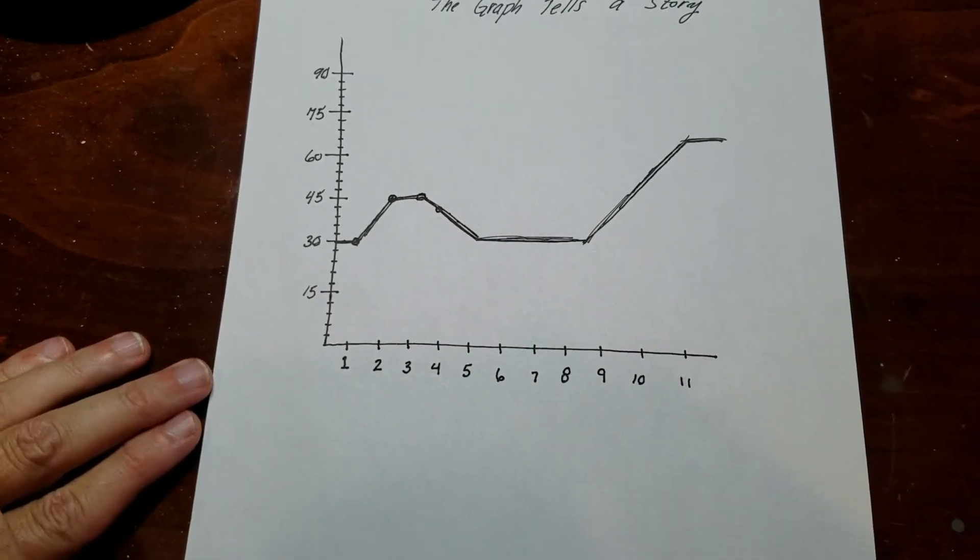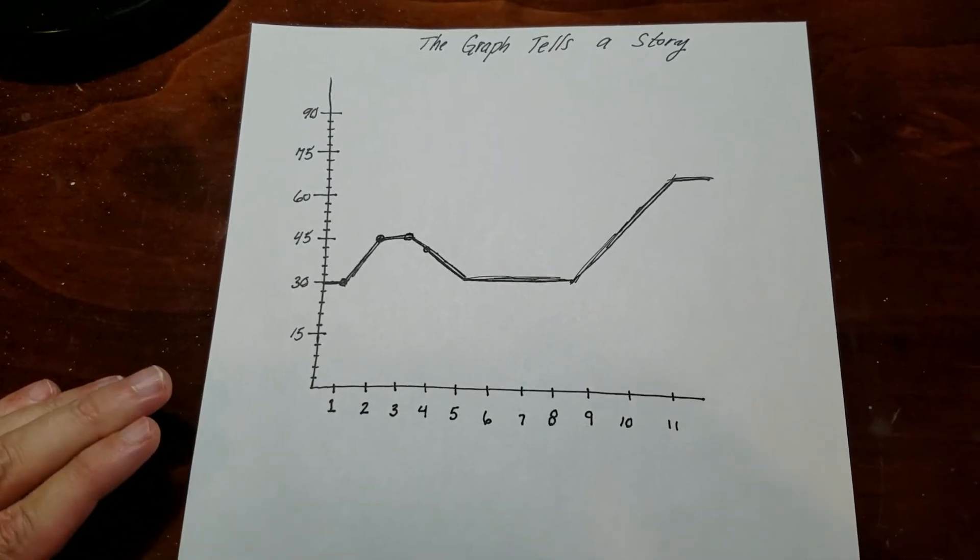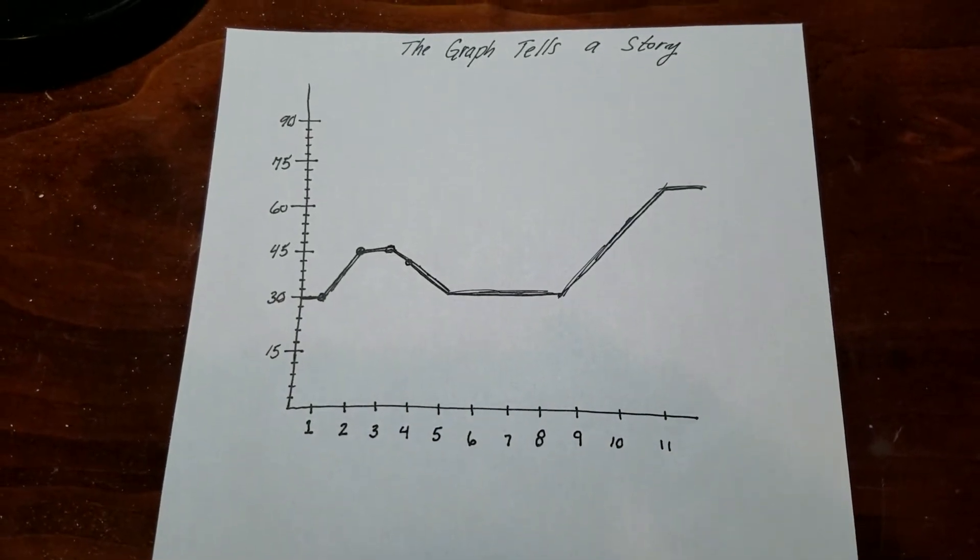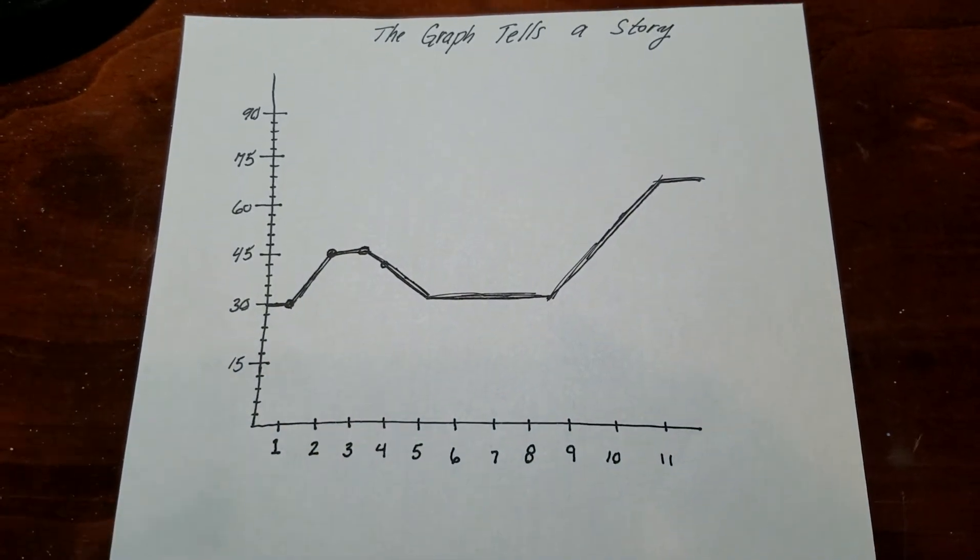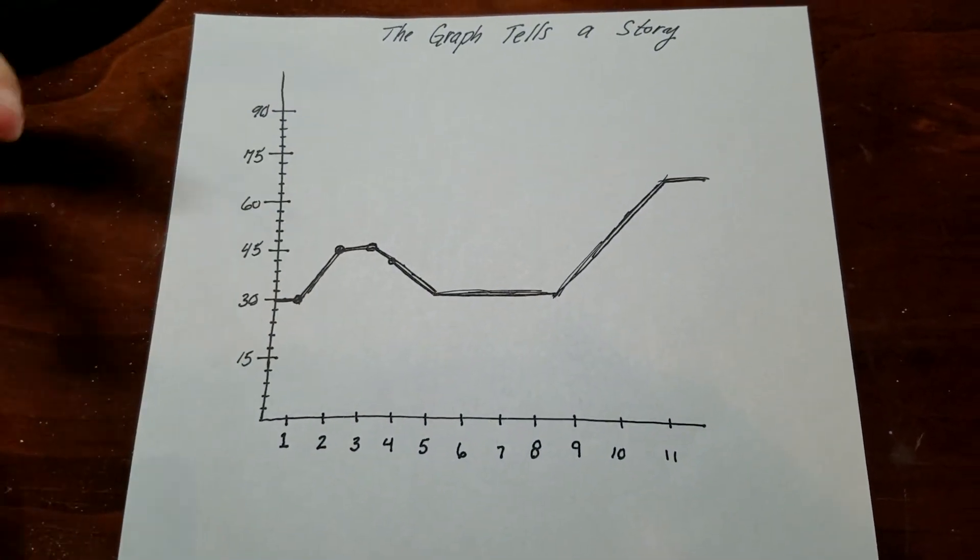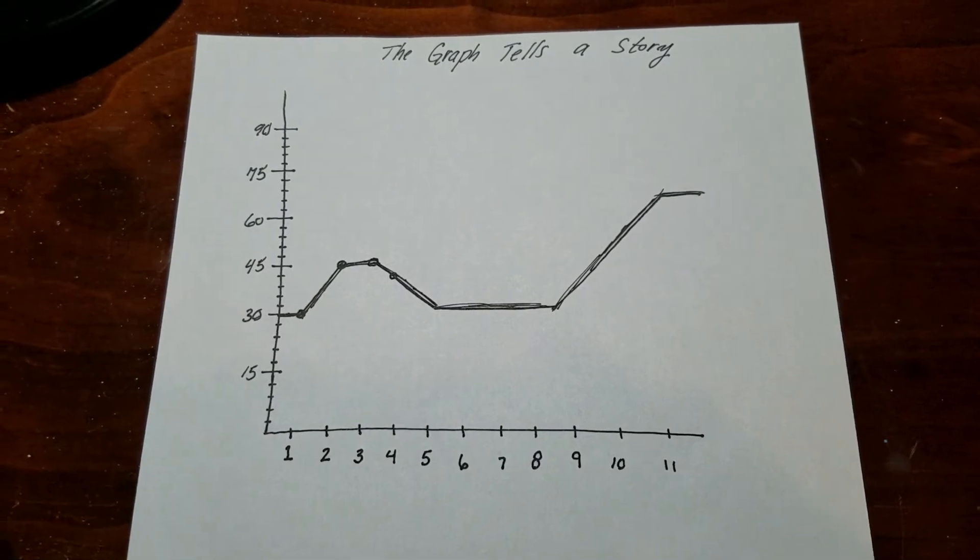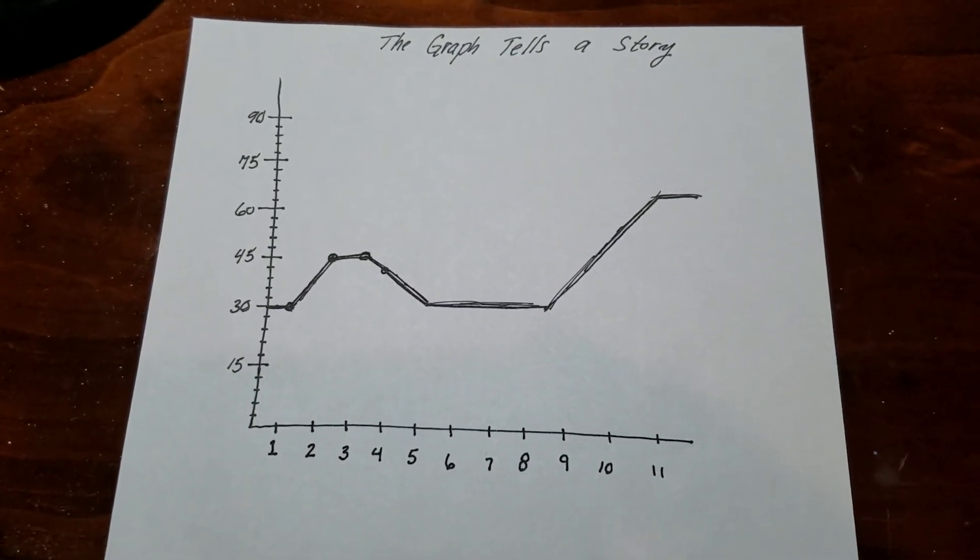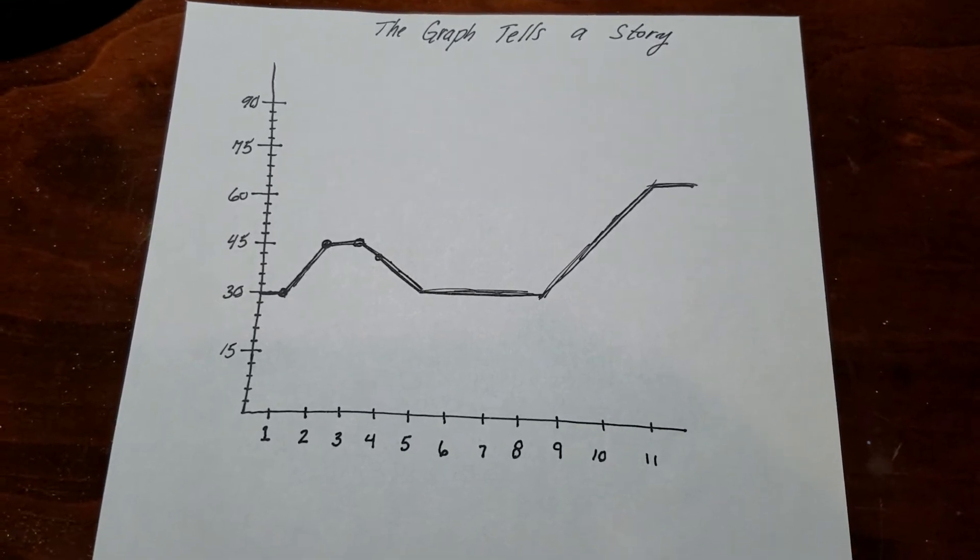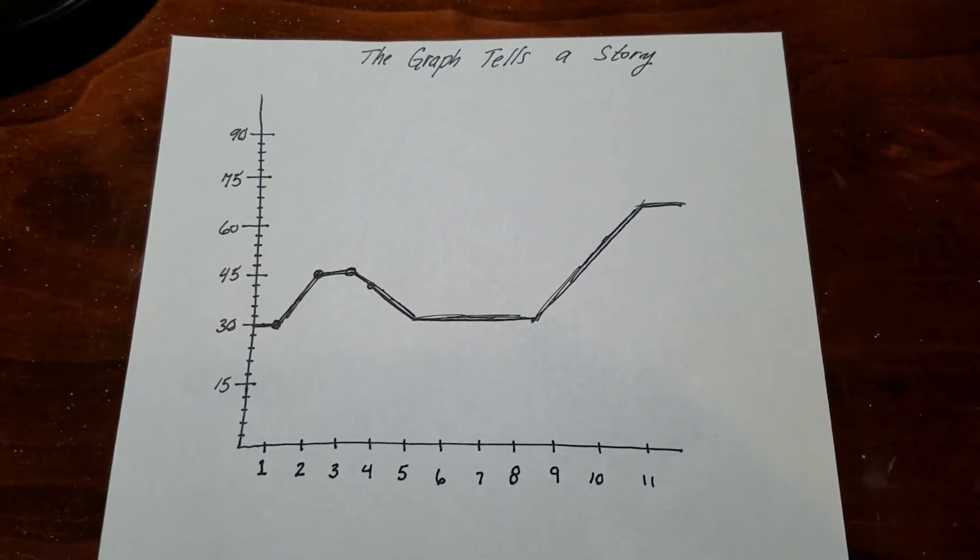All right, this is the second video that discusses line graphs. So in addition to reading a line graph and understanding them, sometimes you're asked to write a story for one. So this is a graph right here. You can see it has no title. It's about nothing. It has some numbers. So we have to come up with something. I'm going to come up with a changing rate story for this, and then I'm going to come up with a changing total story for this.